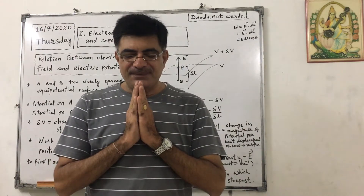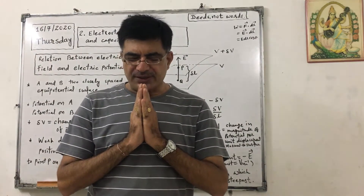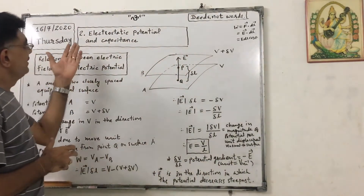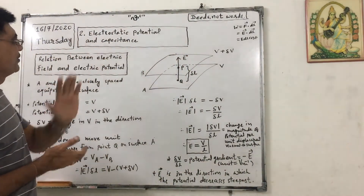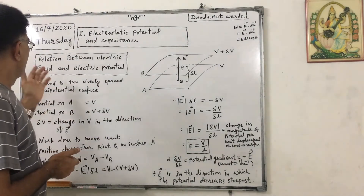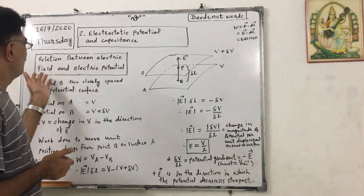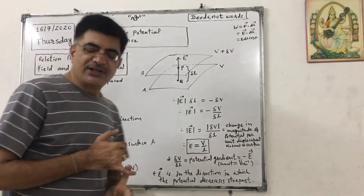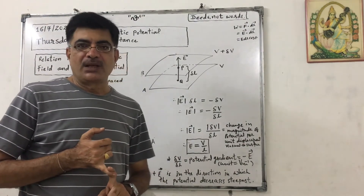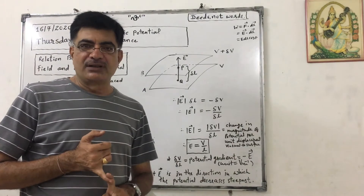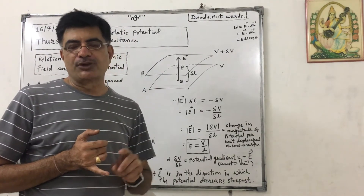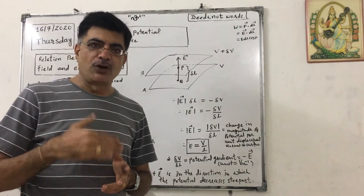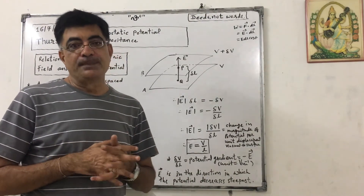Namaskar dear students, prayers to Maashar Dhar. Our topic today is Lesson 2: Electrostatic Potential and Capacitance. The specific topic is the relation between electric field and electric potential. Electric field is a vector quantity, and electrostatic potential is a scalar quantity, so whatever relation we obtain will be of magnitudes.